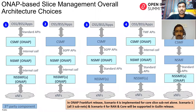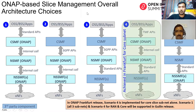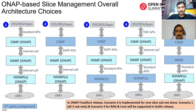Through brainstorming, we identified five different scenarios in which ONAP could be used for 5G slicing orchestration and management. The core of it is the SO part. The first scenario has CSMF, NSMF, and NSMF all within ONAP itself, where all slice management happens within ONAP.